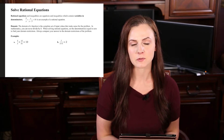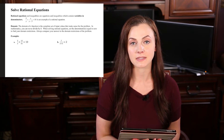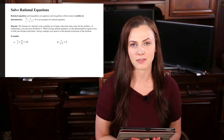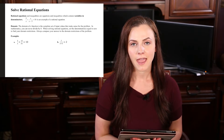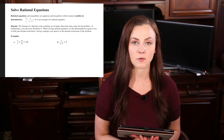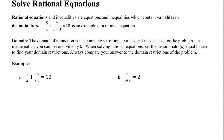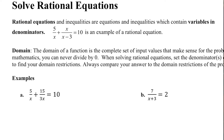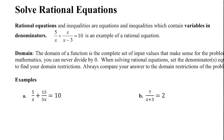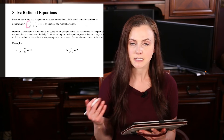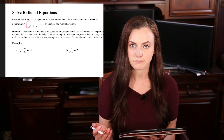Hi, welcome to Math After Hours with Ms. Austin. I'm a licensed math teacher here to answer your math questions, and today we are looking at solving rational equations. A rational equation is an equation that contains variables in the denominator. So right here, this 5 over x plus x over x minus 3 equals 10 is an example of a rational equation.